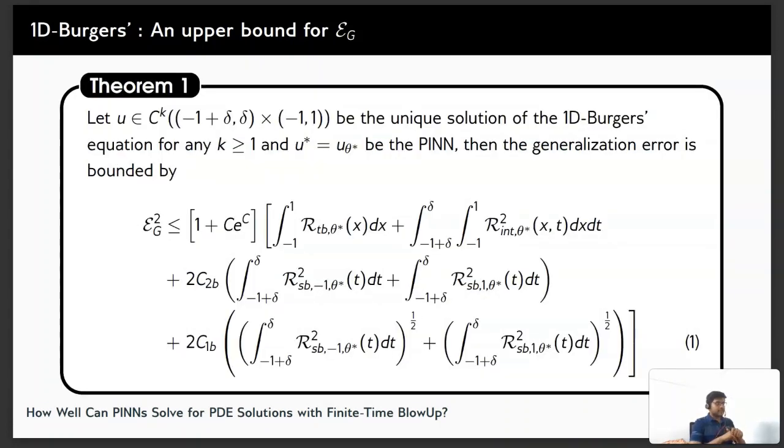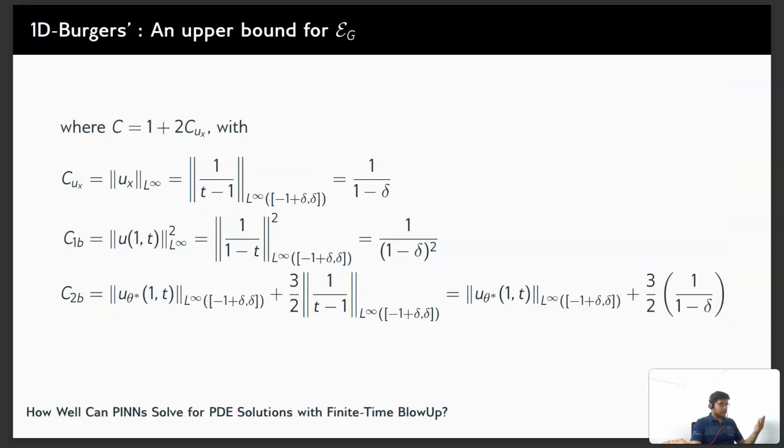So we assume that u is at least once differentiable and u* or u_theta* is a PINN. Then the generalization error is bounded by this. Here you see there are three constants c, c1, and c2. c is 1 plus 2c_ux and these are the three constants which can be easily derived once we have delta.